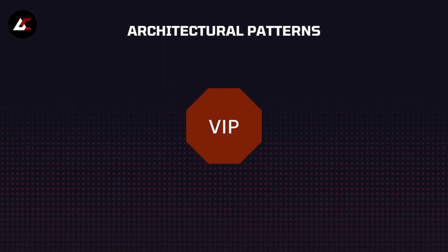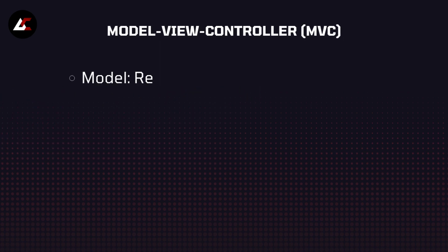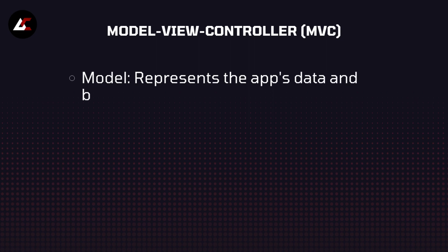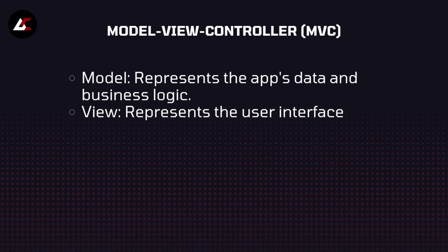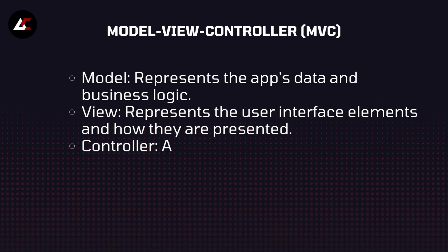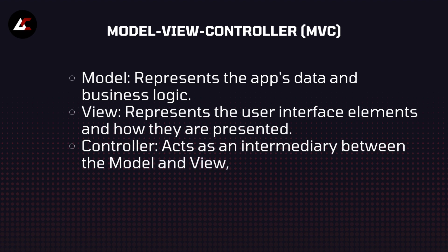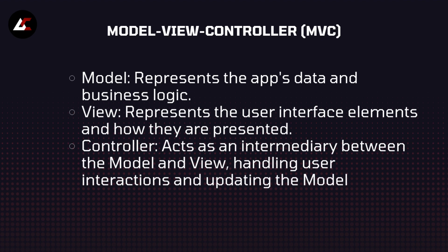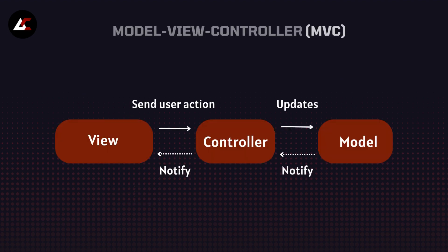Here we will be discussing three common architecture patterns briefly explained with examples. Let's start with Model View Controller — MVC. The Model represents the app's data and business logic. The View represents the user interface elements and how they are presented. The Controller acts as an intermediary between the model and view, handling user interactions and updating the model and view accordingly.